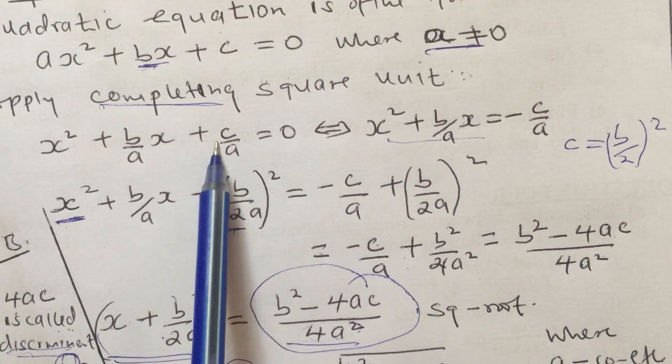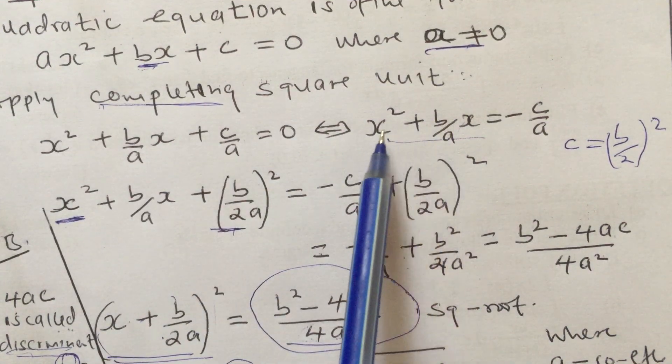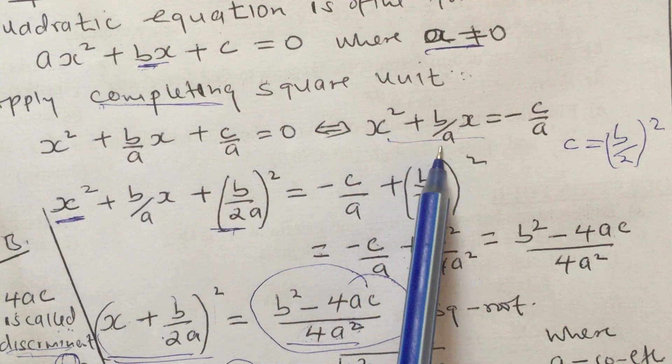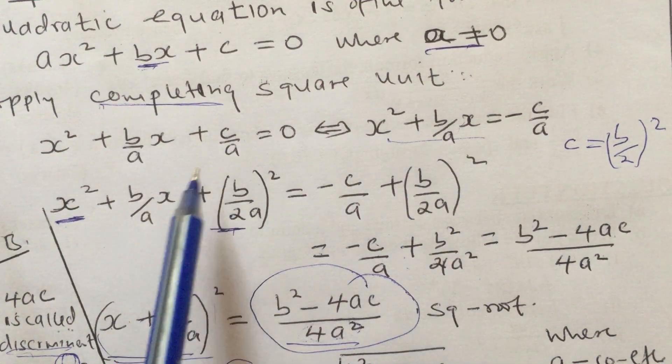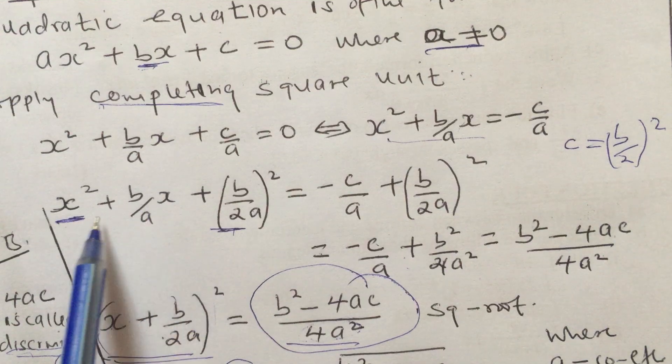Secondly, take the constant c/a to the other right-hand side to have x² + (b/a)x = -c/a. Notice the left-hand side is lacking part c.